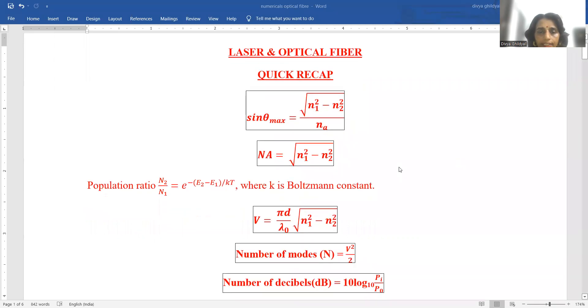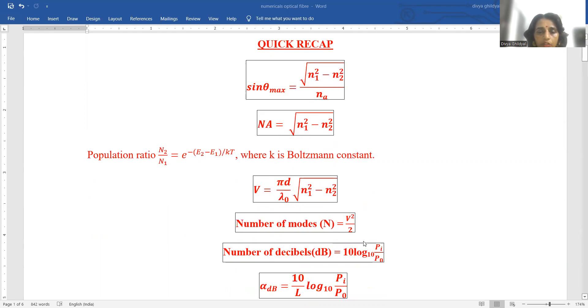Quickly, sine theta maximum equals under root n1 square minus n2 square upon nA. Numerical aperture is under root n1 square minus n2 square, where n1 and n2 are refractive indices of core and cladding respectively. Population ratio n2 upon n1 equals e to the power of minus E2 minus E1 upon kT, where k is Boltzmann constant.